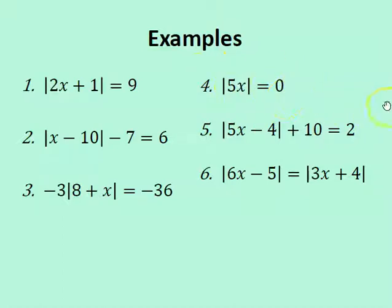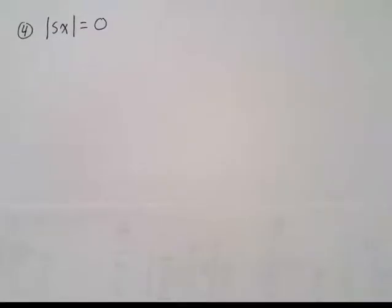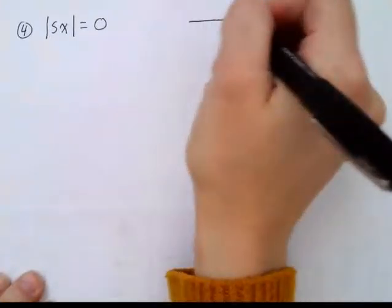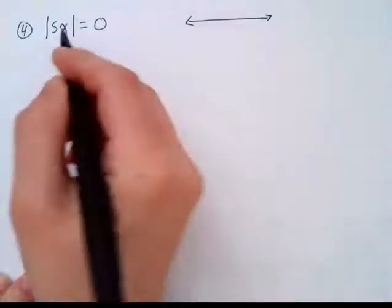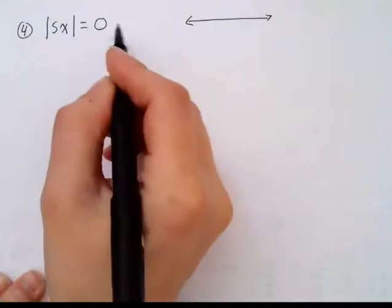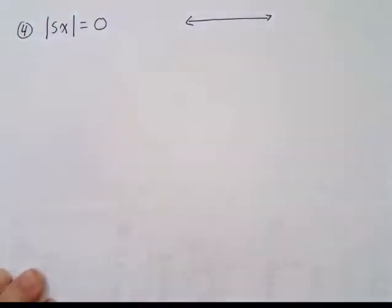Number four we have the absolute value of 5x equals zero. My absolute value here is already isolated. I'm going to think about what this means. This means that the distance that this expression is from zero is zero units away.